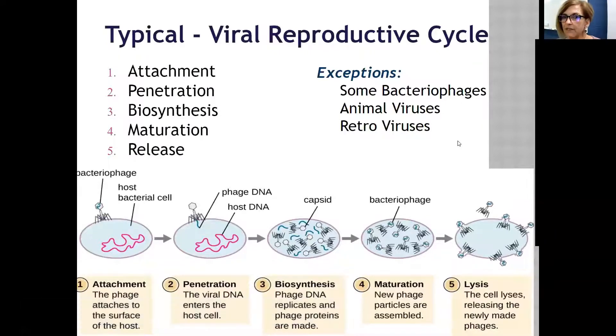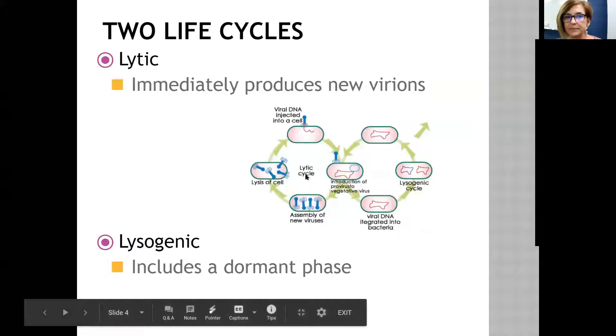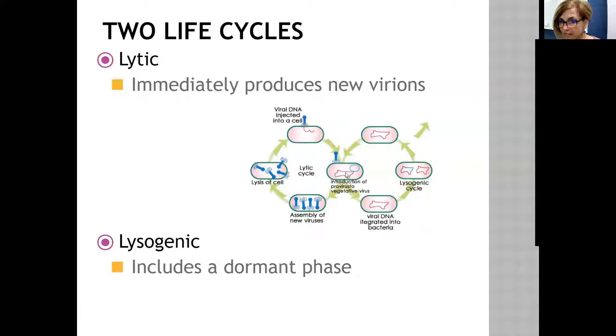Some bacteriophages, animal viruses, and retroviruses do not necessarily follow this path. Lytic and lysogenic are kind of interconnected. Lytic will immediately destroy the DNA of the host cell, make more viruses, and the cell will burst, releasing the new viruses. The lysogenic cycle is almost like the G0 phase, taking a break from the cycle.